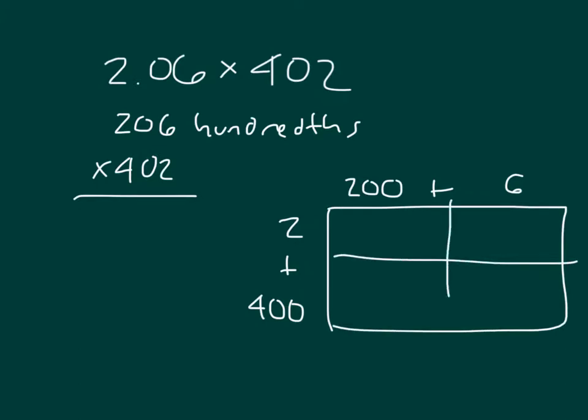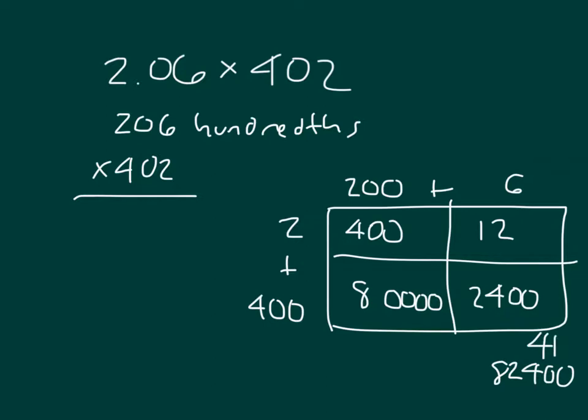2 times 200 is 400. 2 times 6 is 12. 200 times 400 would be 4 zeros. And then 2 times 4 is 8. And then 400 times 6 is 2,400. 80,000 plus 2,400 would be 82,400. And then adding a cross for 400 plus 12 is 412. Adding those two together I would get 82,812. And then we're dealing with hundredths. So it should be 828.12.